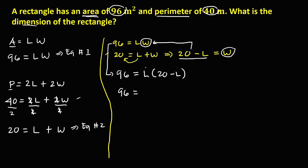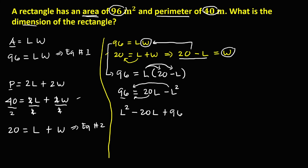Simplifying, we have 96 equals 20L minus L squared. To equate this equation to zero, transpose the L squared to the other side so negative L squared becomes positive L squared, and transpose the positive 20L so it becomes negative 20L. Bringing down the 96, we get L squared minus 20L plus 96 equals 0. We now have a quadratic equation.